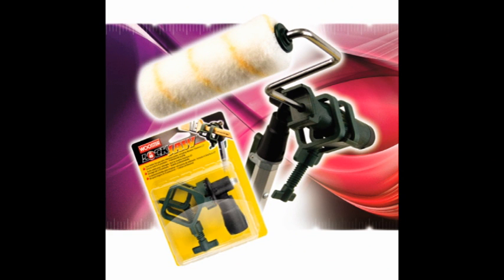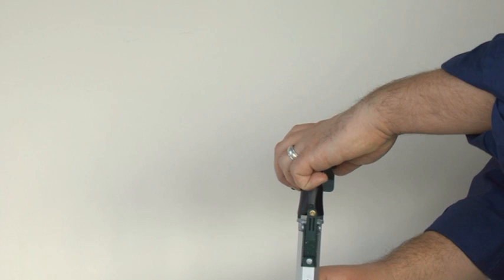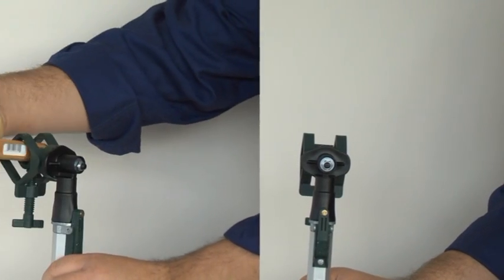Not every tool that you need to use is meant for an extension pole. And even pole-ready tools don't always give you the best approach angle for every job. That's where the new Worcester Lockjaw tool holder comes in.